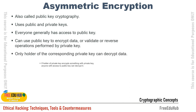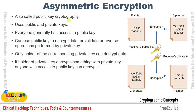Asymmetric encryption, also called public key cryptography, uses both public and private keys. Everyone generally has access to public keys — you can comfortably share your public key with anyone. The public key can encrypt data or validate operations performed by the private key. Only the holder of the corresponding private key can decrypt the data. If the holder of the private key encrypts something with the private key, anyone with the public key can decrypt it — this is used for digital certificates.